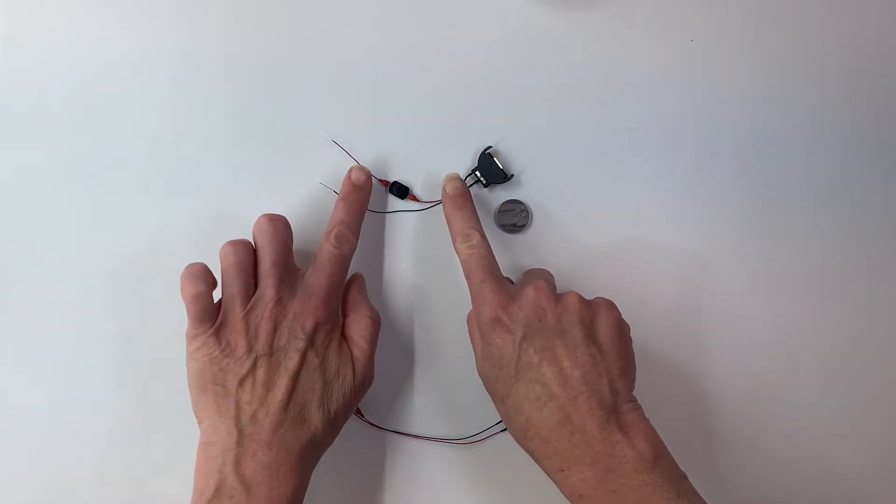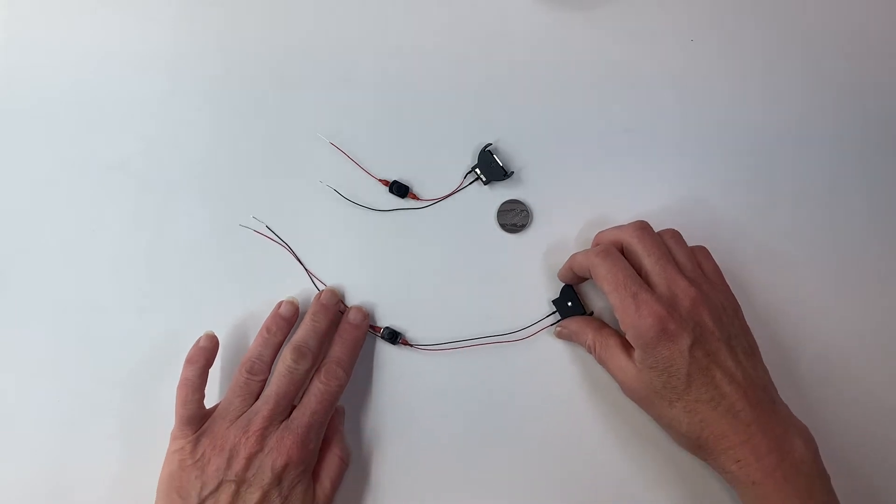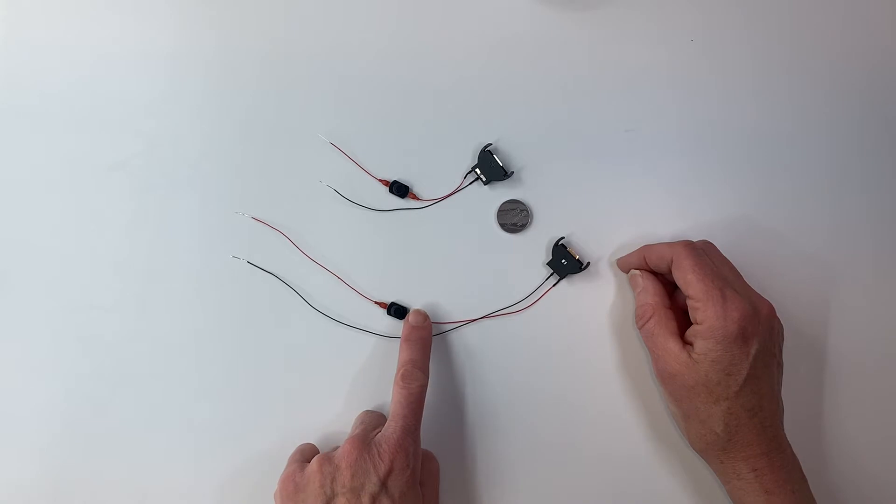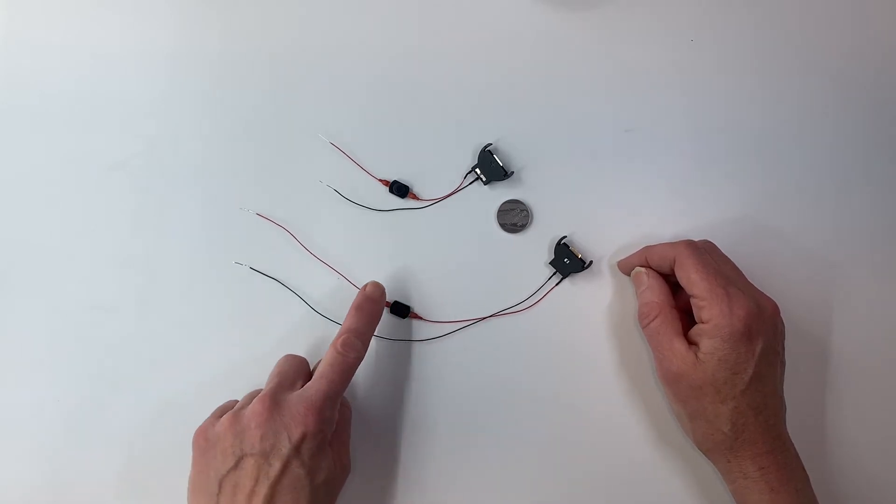We have the coin cell holder with four-inch wire or with eight-inch wire. This is the eight-inch wire and what I mean by that, there's four inches of wire, a switch, and four more inches of wire.